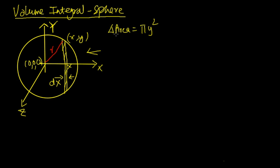width dx, the small volume will be the area multiplied by the width, which is pi y squared dx. Now this is a right triangle and Pythagorean theorem states